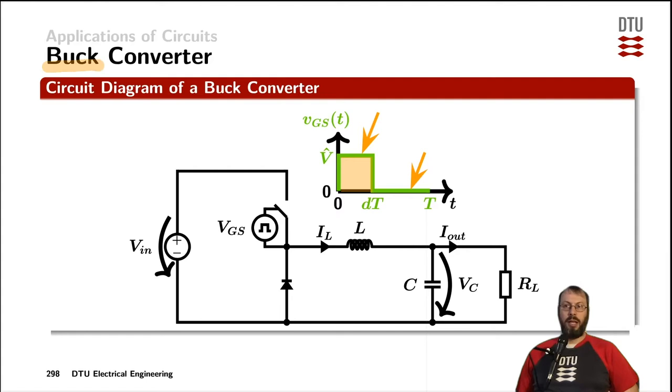The converter consists of a power MOSFET controlled by its gate source voltage, which are pulses from a pulse width modulation circuit, a power diode, an inductor, and an output capacitor. The aim is to convert the DC input voltage into the DC output voltage that the load requires.